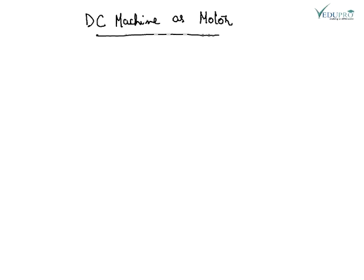A DC motor is a DC machine which converts electrical energy into mechanical energy. If a current carrying conductor is placed in a magnetic field, mechanical force is experienced on the conductor, the direction of which is given by Fleming's left hand rule.